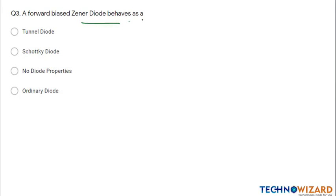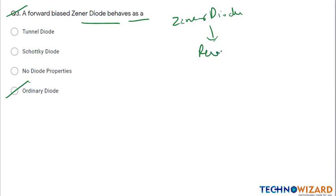Question number three: a forward biased zener diode behaves as an ordinary diode. This is a very easy question. Because a zener diode always works in reverse biased mode, a forward biased zener diode will behave as an ordinary diode.